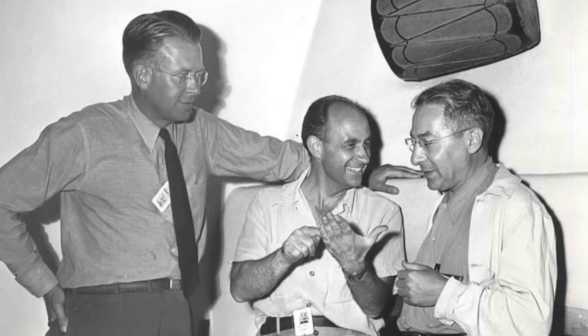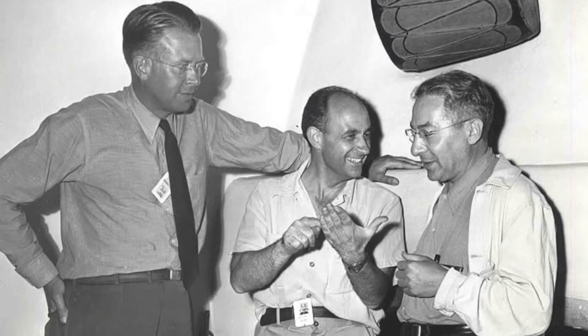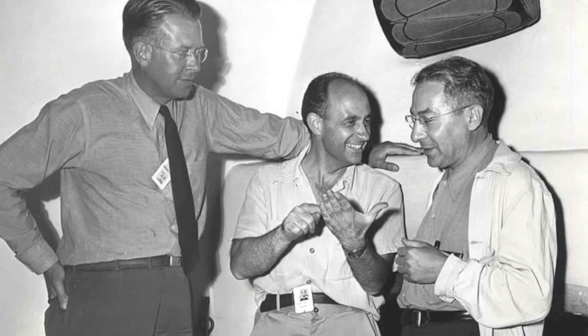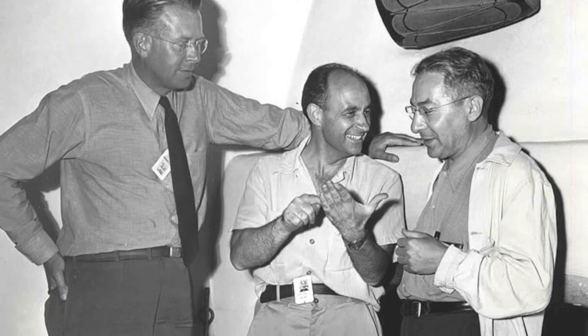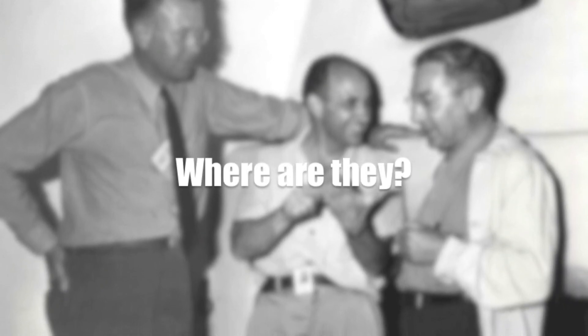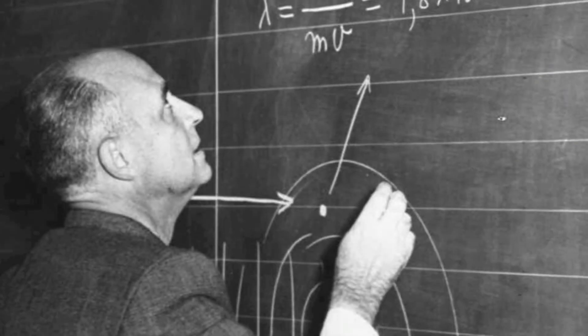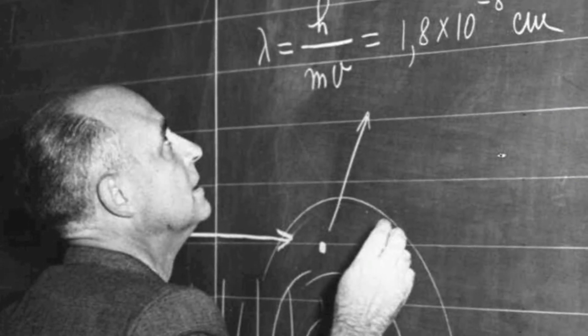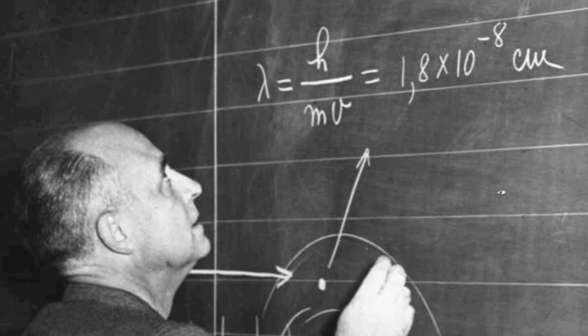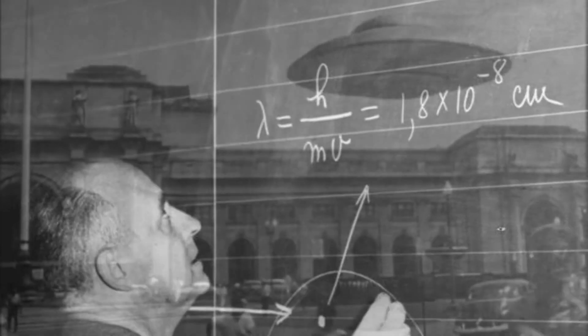Enrico Fermi, the Nobel Prize-winning Italian physicist who did prodigious work on quantum theory and the development of the first atomic bomb during the Manhattan Project, unexpectedly asked his colleagues over an informal lunch, 'Where are they?' Although each participant has a slightly different recollection of what precipitated Fermi's query, they all agreed that it was on the subject of space travel and the purported reality of flying saucers.